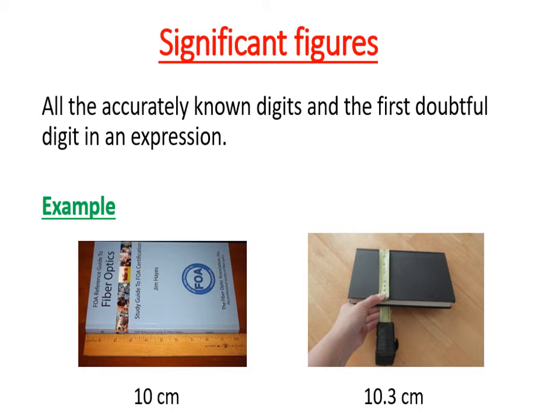Some children are saying the length is 10, and here we have no doubt. Other students are saying that it is 10.3 — here we have no doubt about 1 and 0, but 3 is a doubtful digit. So in 10.3 we have three significant figures.